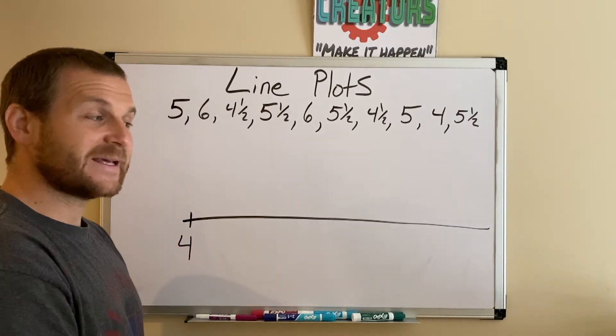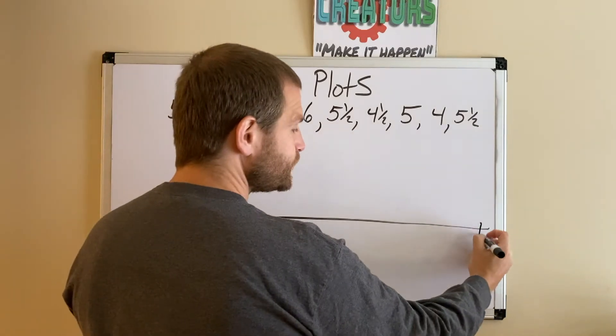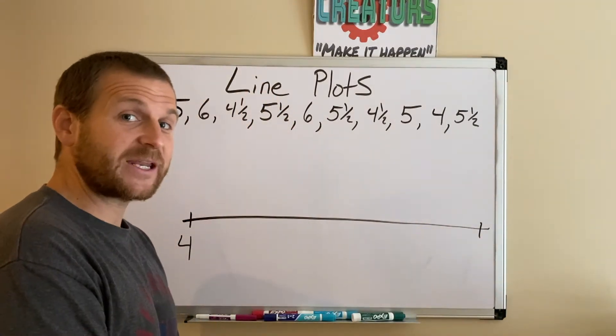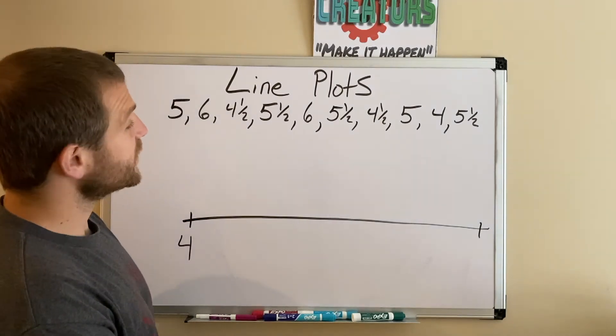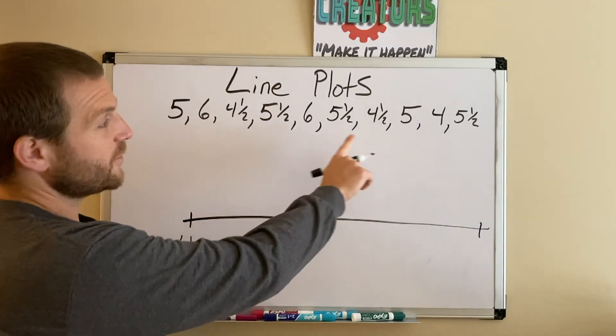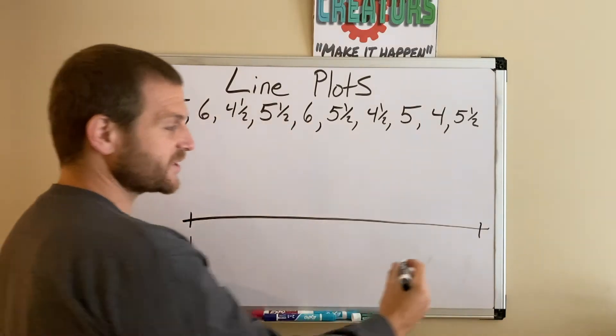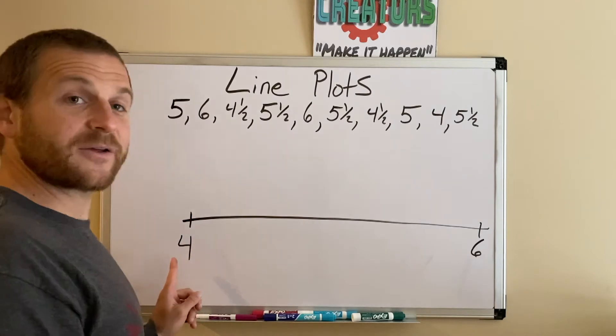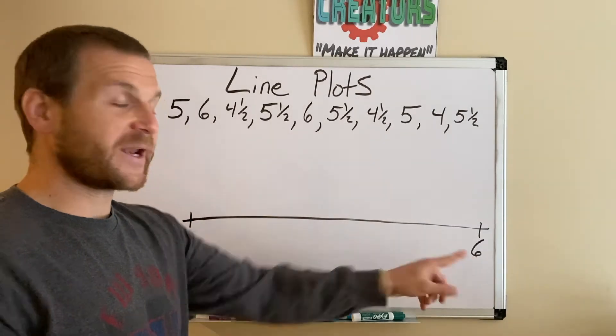Then I want to go to my other side and I want to go to what is the greatest amount of time it took anybody to say the alphabet. If I look through here, it goes all the way up to 6. 6 is the greatest amount of time, so I have 6 right here. I need to know the least and the greatest, and those are going to be my ends of my line plot.